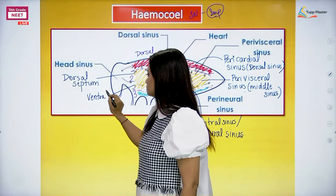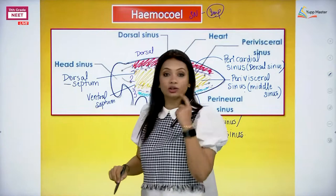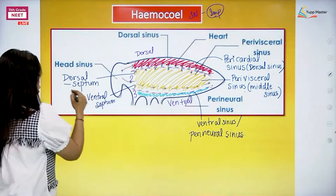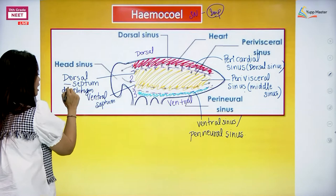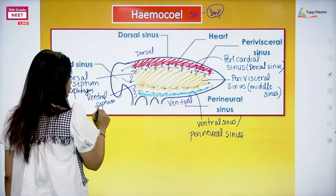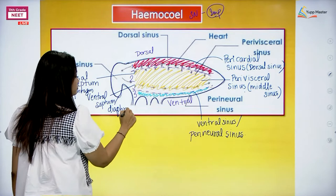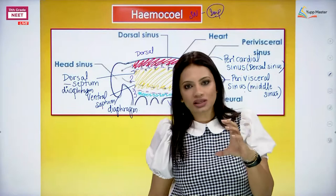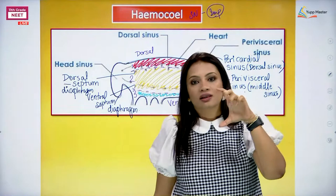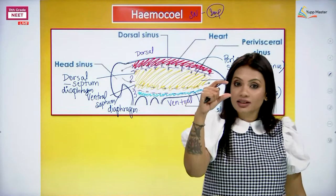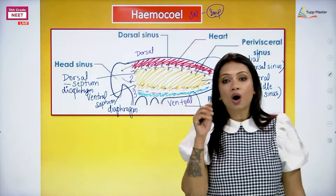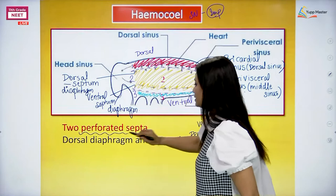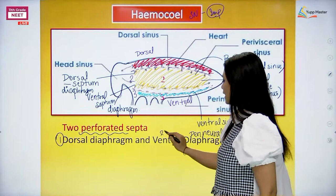Instead of septum, you may also use the word diaphragm. More commonly, it is called the dorsal diaphragm and ventral diaphragm. Just like how between our thoracic and abdominal cavity there is a diaphragm separating the two, same way here instead of septum you may call it the ventral diaphragm. With the help of two diaphragms - the dorsal diaphragm and the ventral diaphragm - the whole body cavity, that is the whole hemocoel, is separated into three regions: the dorsal sinus, the middle sinus, and the ventral sinus.